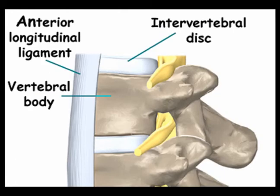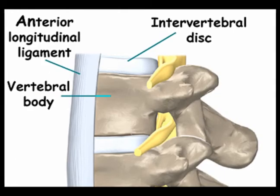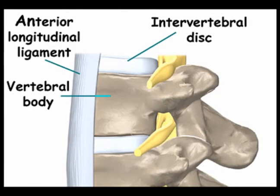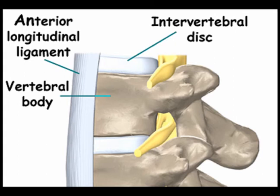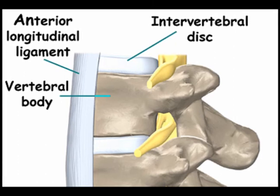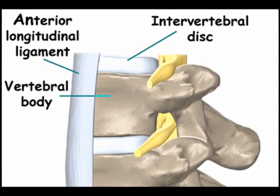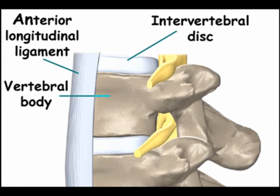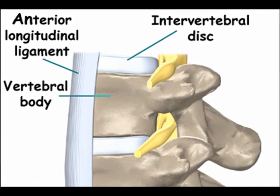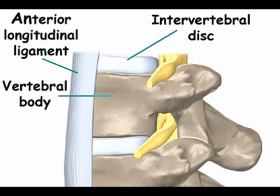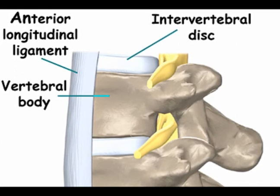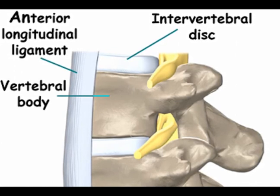The anterior longitudinal ligament is thick and slightly more narrow over the vertebral bodies, and thinner but slightly wider over the intervertebral discs. This difference is much less pronounced than it is in the posterior longitudinal ligament.